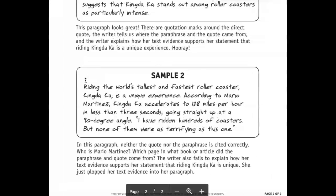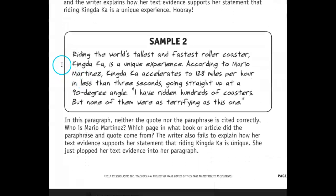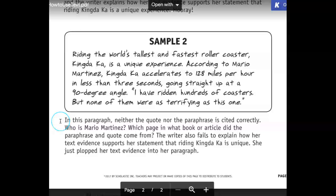Riding the world's tallest and fastest roller coaster, King Dakar, is a unique experience. According to Mario Martinez, King Dakar accelerates to 120 miles per hour in less than three seconds, going straight up at a 90-degree angle. Quote: 'I have ridden hundreds of coasters, but none of them were as terrifying as this one.' What looks like a pretty good paragraph so far — but what's not right about it?